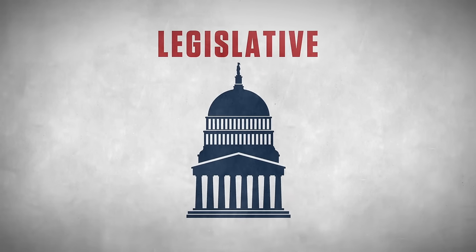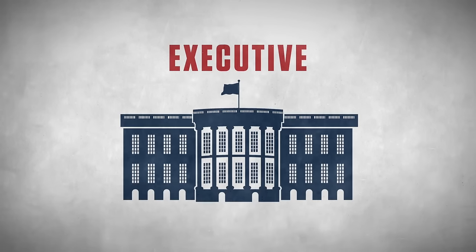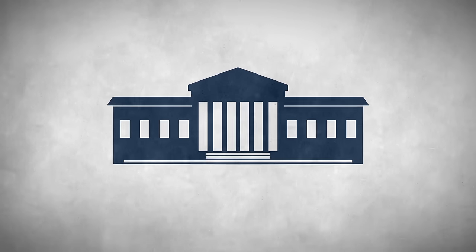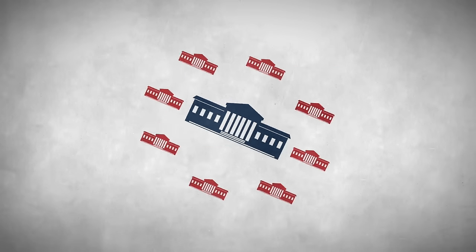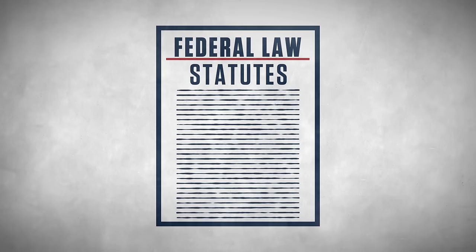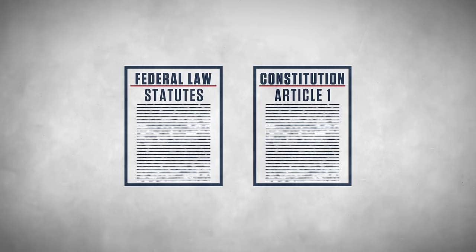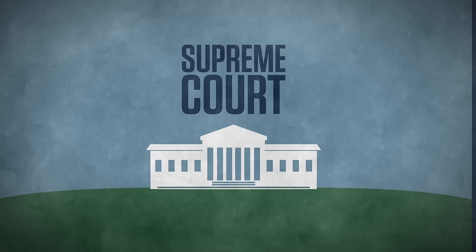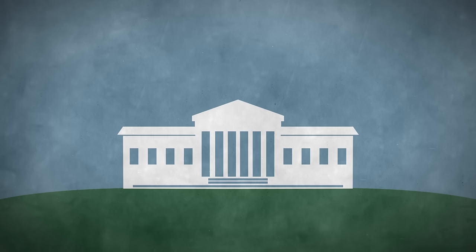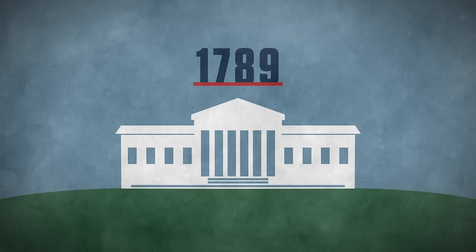There are three branches of government in the United States: legislative, executive, and judicial. The judicial branch is made up of the Supreme Court and other federal courts, whose function is to rule on all matters related to the law and the Constitution. The Supreme Court has enormous power that has continued to grow since its inception in 1789.